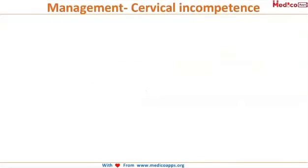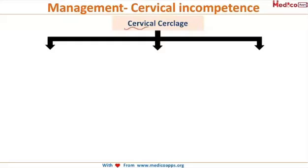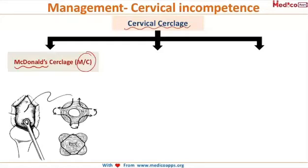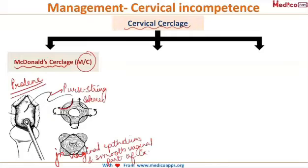The surgical management of cervical incompetence is called cervical cerclage. The most common surgery is McDonald's cerclage, in which a prolene (non-absorbable) suture is used. A purse-string suture is taken as high as possible below the level of the bladder, at the junction of the rugose vaginal epithelium and the smooth vaginal part of the cervix. This suture is then tied anteriorly, closing the open cervical canal.